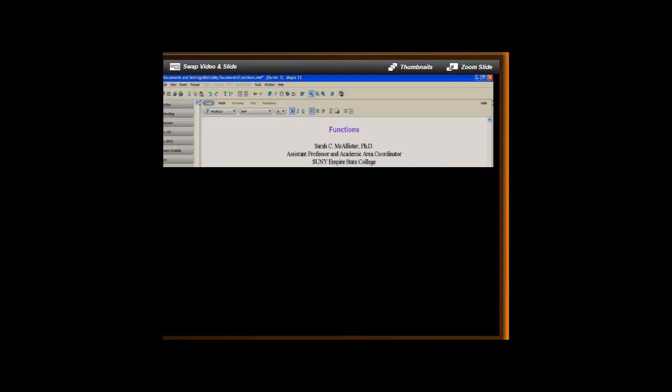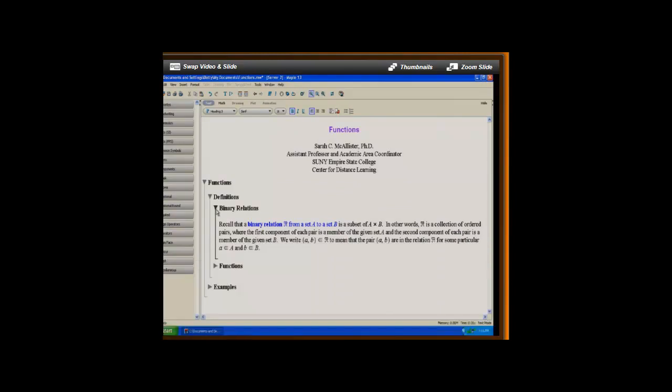Now, let's recall that a binary relation R from a given set A to a set B is a subset of the cross product A cross B. In other words, R is a collection of ordered pairs where the first component of each pair is a member of the given set A and the second component of each pair is a member of the given set B. We write the ordered pair A comma B is an element of R to mean that the pair AB are in the relation R for some particular A and B.